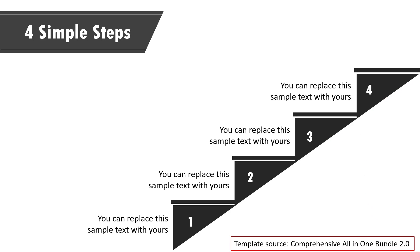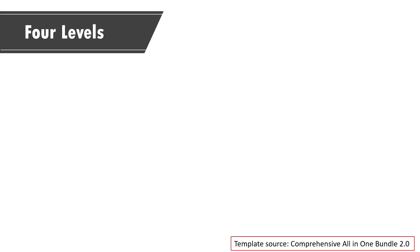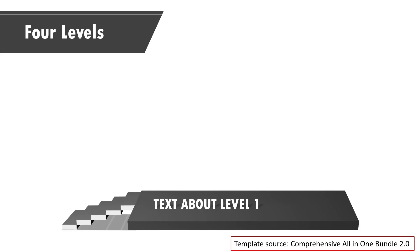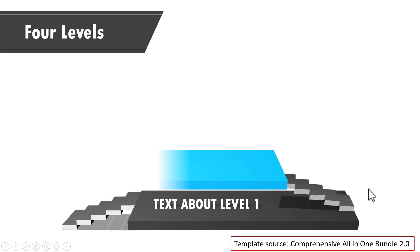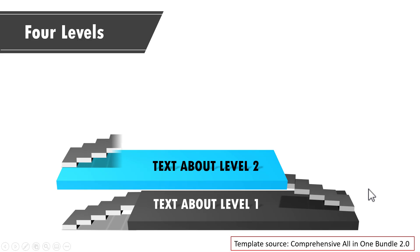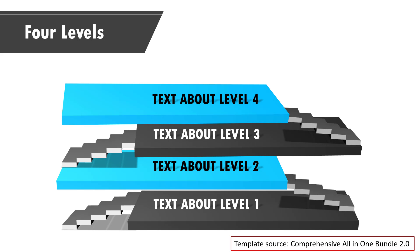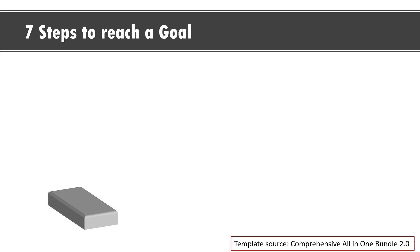If you want to show four levels, you can use this template. On a click we show the first level, write your text about level one, then on a click we show the next level, then the next level, and the final level. If you were to create this graphic on your own, you would be spending a whole bunch of time. The final example shows seven steps to reach a goal.